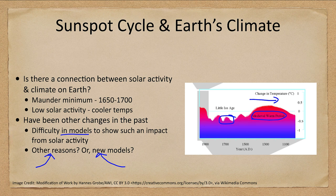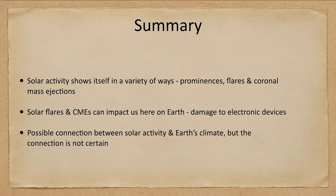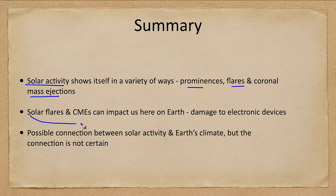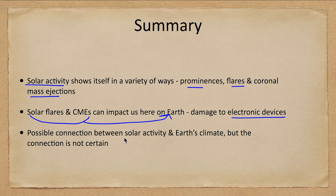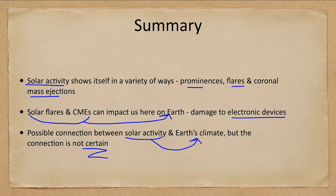To summarize: solar activity shows itself in a variety of ways — prominences, flares, and coronal mass ejections. Solar flares and coronal mass ejections can impact us here on Earth, potentially causing damage to electronic devices and our power grid if directed straight at Earth. However, Earth is a very small cross section, so any individual solar flare is much more likely to miss Earth than to hit it. There is also a possible connection between solar activity and climate, but that remains uncertain and models still need more work.